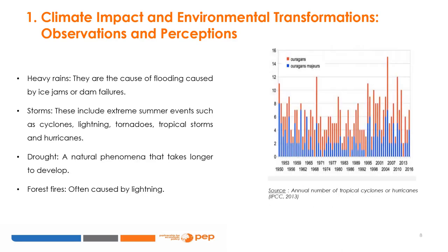Other characteristics resulting from climate change are violent weather, such as flooding, sometimes caused by ice jams or dam failures. There are also extreme summer events such as cyclones, lightning, tornadoes, tropical storms, and hurricanes. Drought is another manifestation of climate change, though that takes longer to develop. Finally, there are forest fires, which are often caused by lightning.